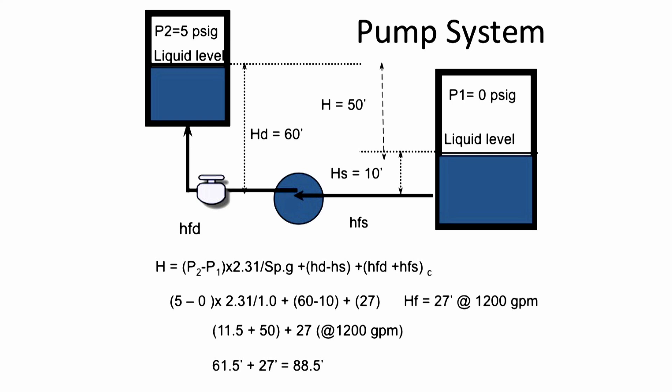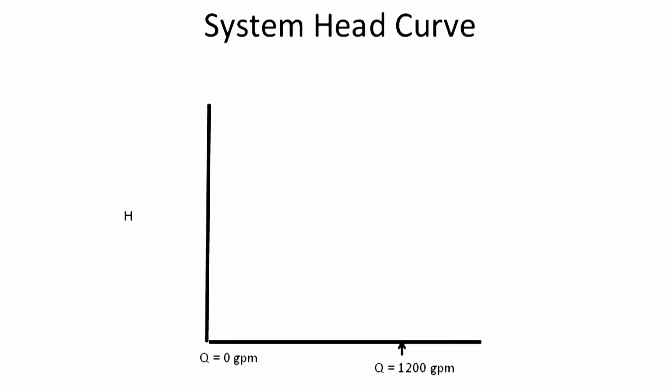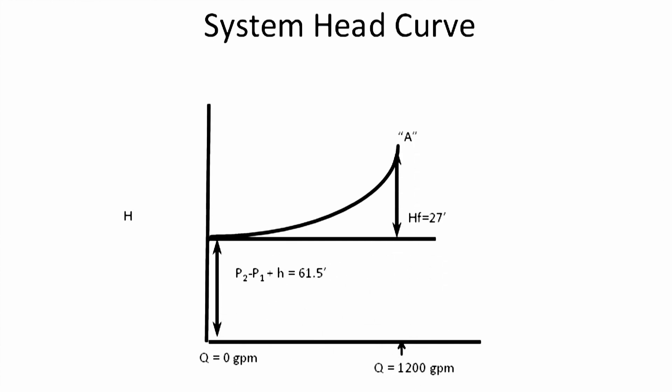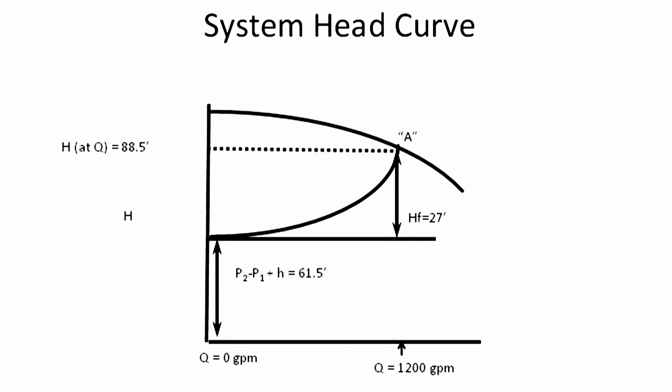We calculated at 1,200 gallons per minute a 27-foot friction loss, so the total head is 88.5 feet. This can be seen on the system head curve. We take the pressure head and the elevation head, which adds up to 61.5 feet, then factor in the friction loss, which varies from zero at zero flow to 27 feet at full flow. Therefore, the total head is 88.5 feet — point A, the point at which you pick your pump.